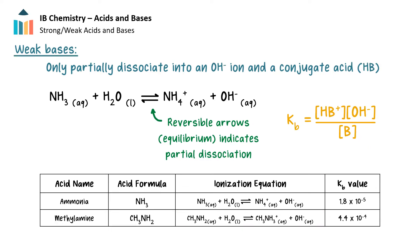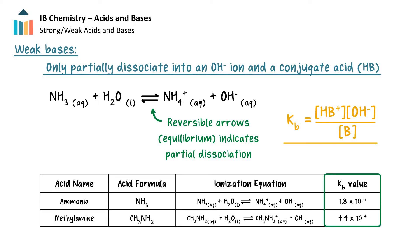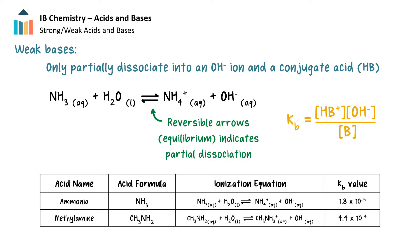And similarly, weak bases also only partially dissociate into their constituent ions. The Kb values — Kb is the equilibrium constant for bases — of weak bases are also less than 1, and so just like weak acids, the equilibrium position contains significant amounts of reactant and therefore much less hydroxide ion is generated. The base ionization equation for weak bases is also shown with a two-way arrow, indicating that both reactant and product are present at equilibrium.